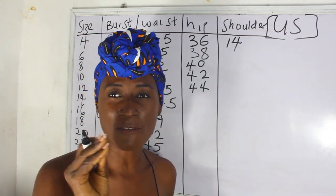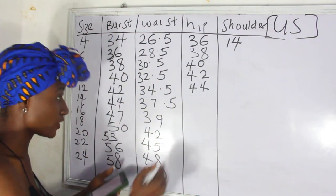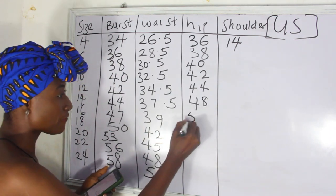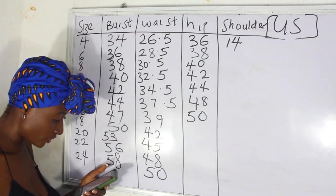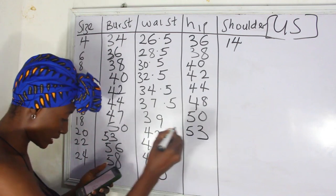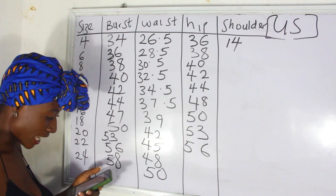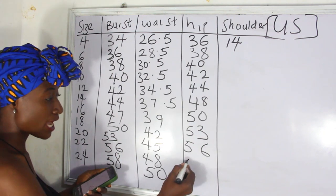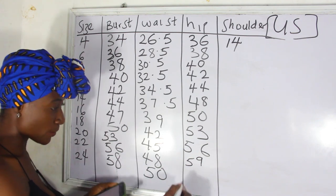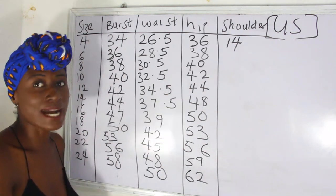Size 12 hip is 44 inches. From size 14 there are slightly bigger changes: size 14 is 48 inches, size 16 is 50 inches, size 18 is 53 inches, size 20 is 56 inches, size 22 is 59 inches, and size 24 is 62 inches.